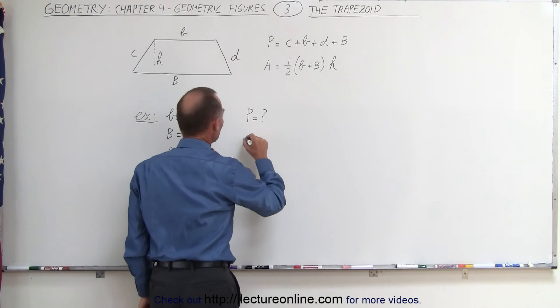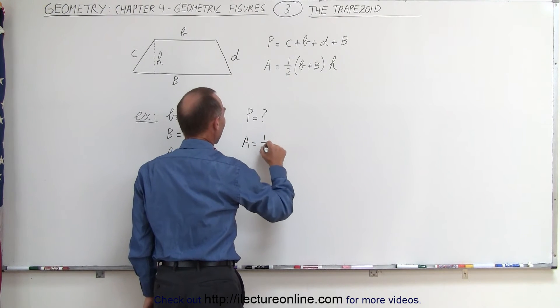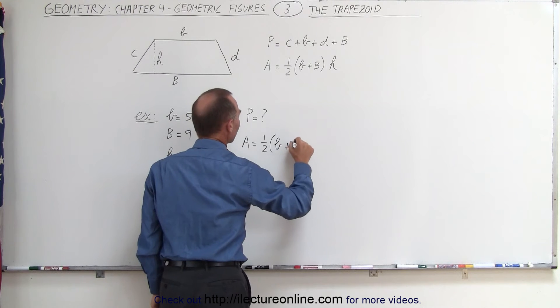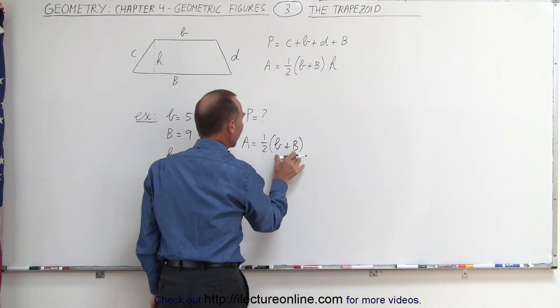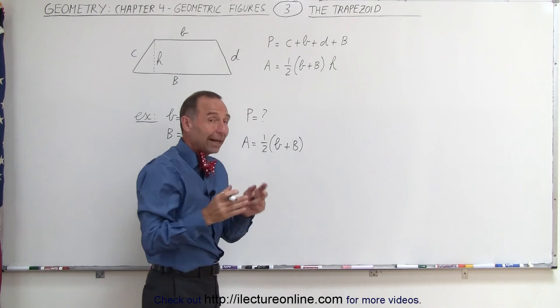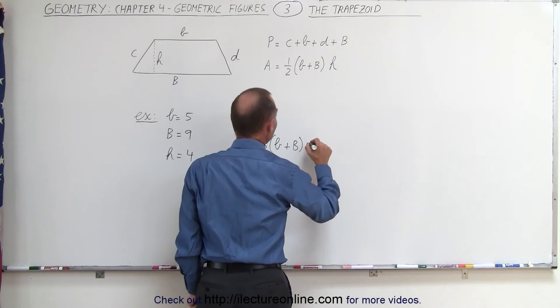But we can find the area. We know that the area is equal to one half times the sum of the small and the large sides that are parallel to one another, times the height.